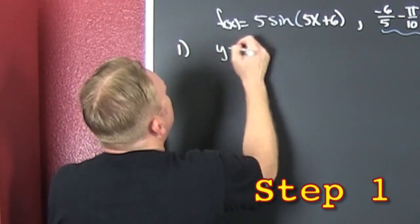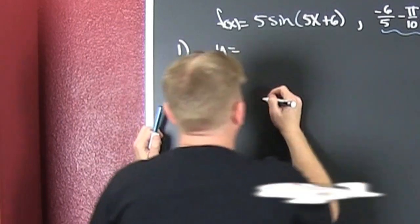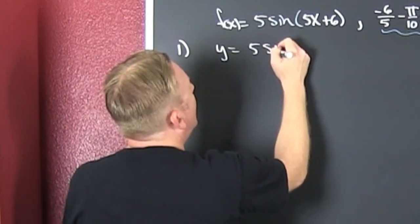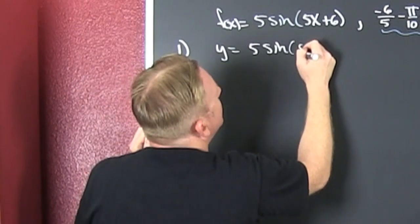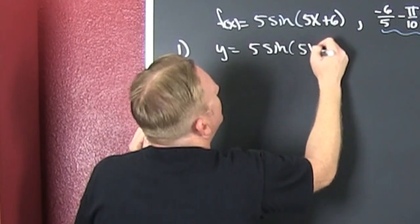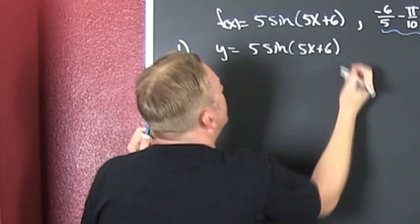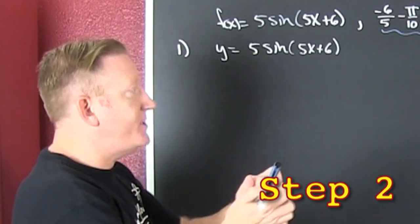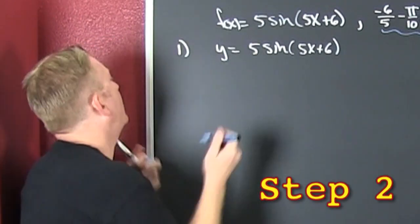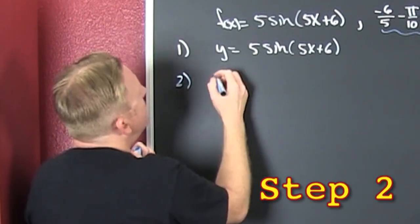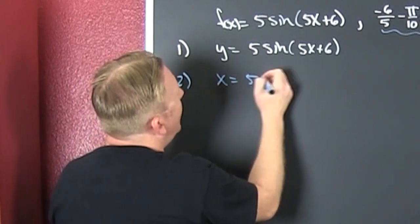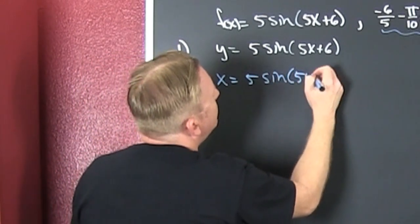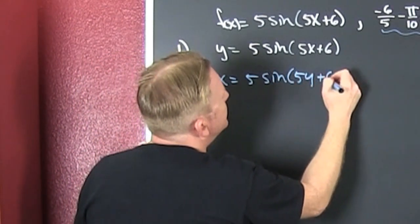Step one: replace f of x with y, because it's easier on the eye. I'm going to rewrite that argument. Step two: interchange x and y. So now x is equal to five times the sine of 5y plus 6.